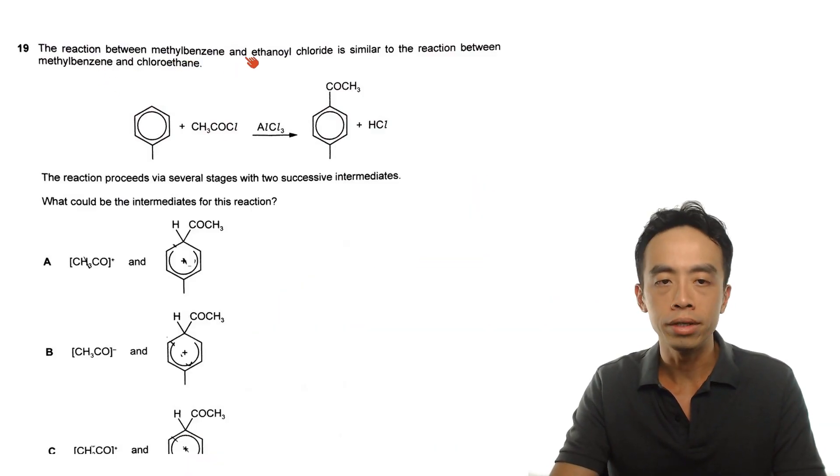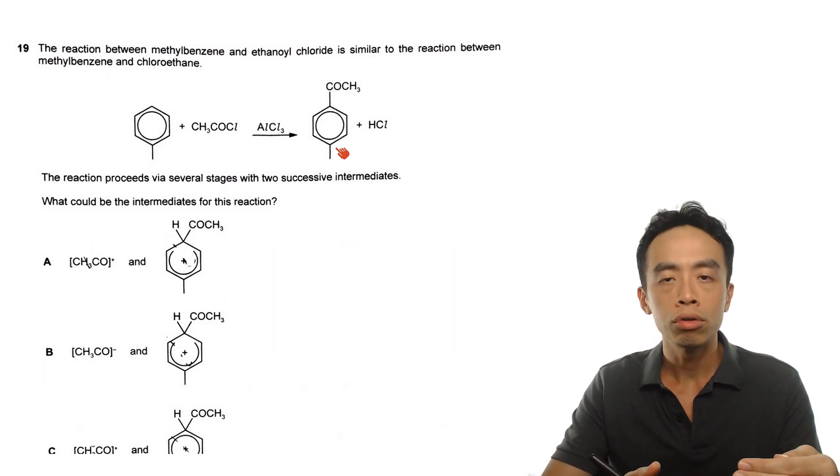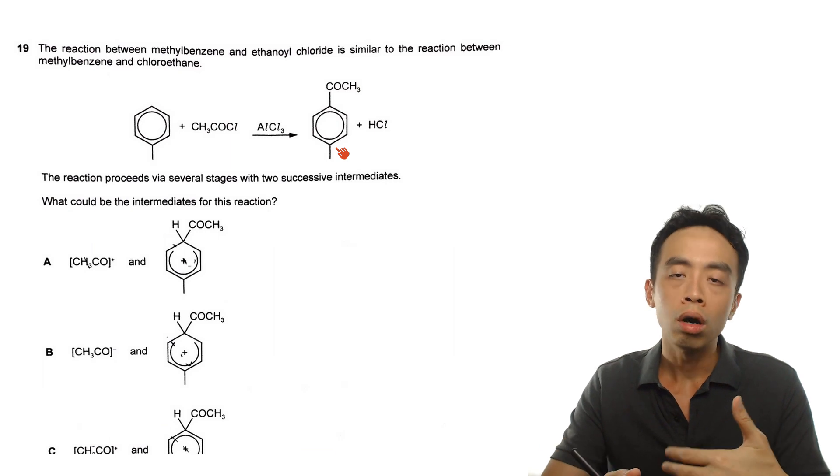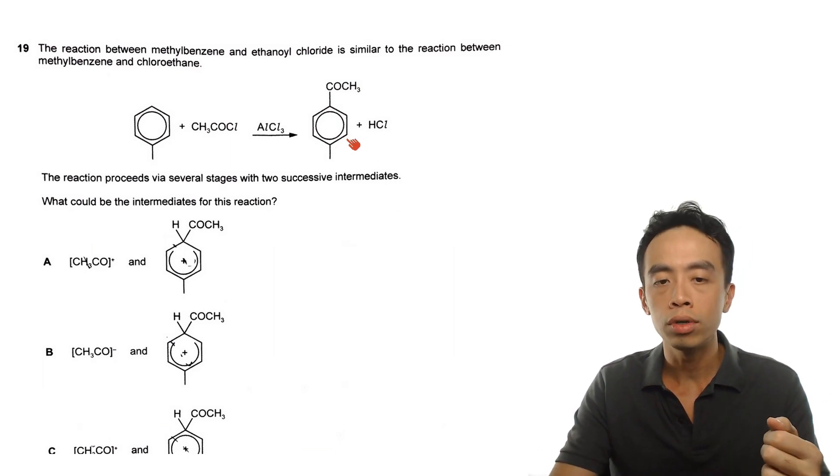Question 19 goes something like this: The reaction between methyl benzene and ethanoyl chloride is similar to the reaction between methyl benzene and chloroethane. So the reaction is given, methyl benzene is here, the methyl group is at the bottom. This is my acid chloride functional group. In the presence of AlCl3, I will substitute this COCH3 group to position 4 with respect to the methyl group. Now this is reasonable because we know that a methyl group is a 2-4 directing group, so it will direct the incoming group to position 2 or position 4 with respect to itself. So this product, in principle, is possible.